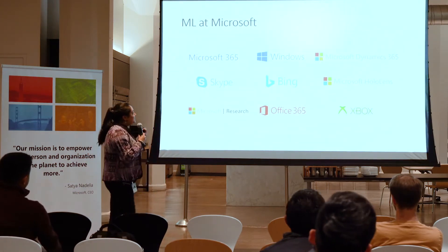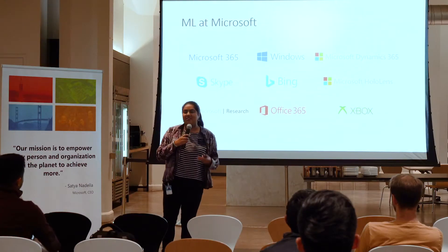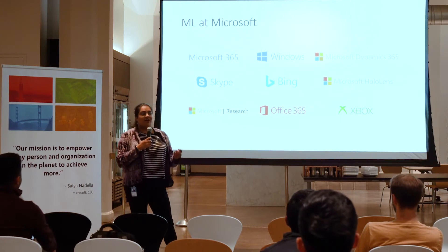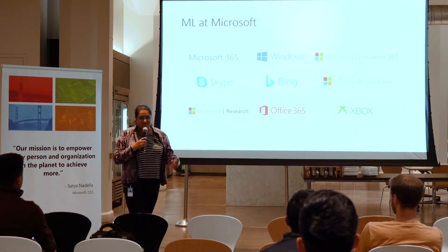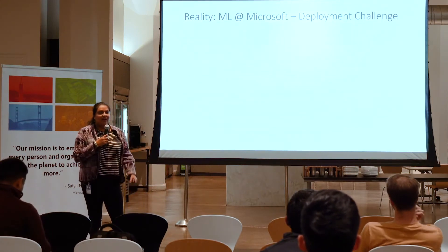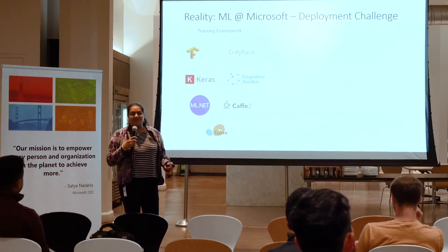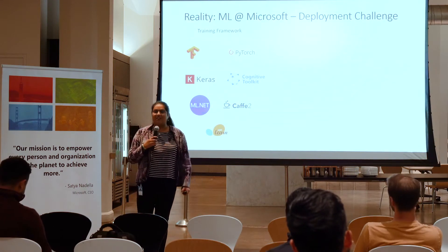We've integrated machine learning into pretty much every aspect of our stack — from HoloLens to Xbox, from Bing to Office 365, from Windows to Skype. But since it's on all of our products and becoming more and more of a big thing at Microsoft, we see that there are some real deployment challenges at scale. Namely, we have a lot of different engineers, and each of these engineers and data scientists want to use their own separate training framework. We've seen actually over six frameworks in production.